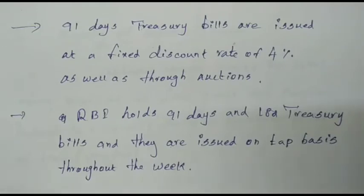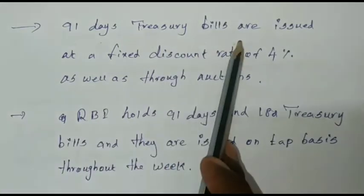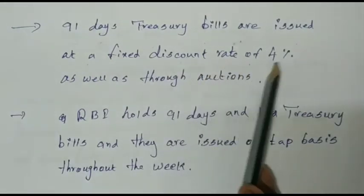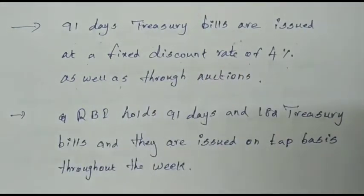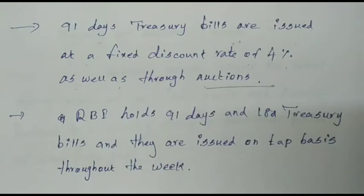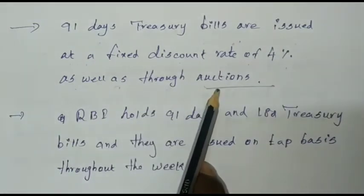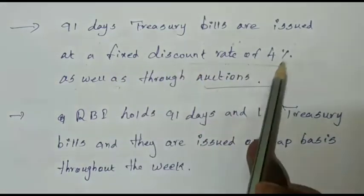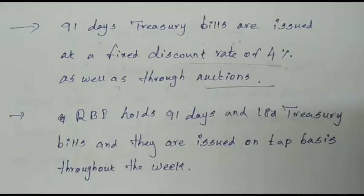The first point is: 91 Days Treasury Bills are issued at a fixed discount rate of 4%, as well as through auction.